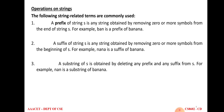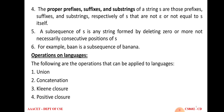A substring is obtained by deleting any prefix or any suffix — removing symbols from the beginning and from the end. For example, by removing 'ba' from the beginning and 'a' from the end of 'banana', we get the middle letters 'nan', which is a substring. Proper prefix, proper suffix, and proper substring are prefix, suffix, and substring respectively that are not equal to epsilon and not equal to the string itself.